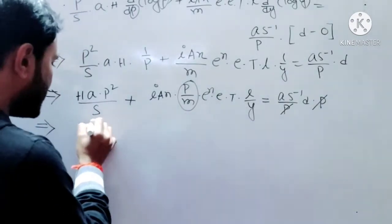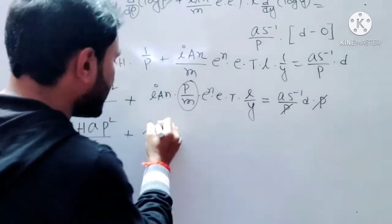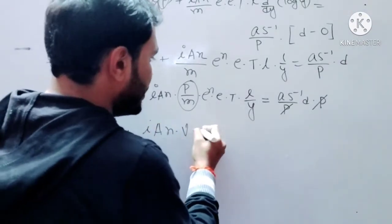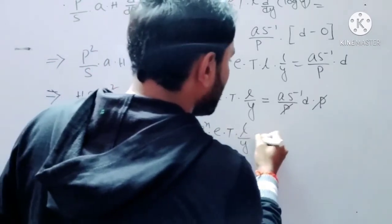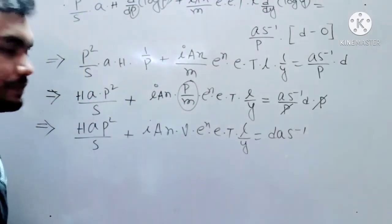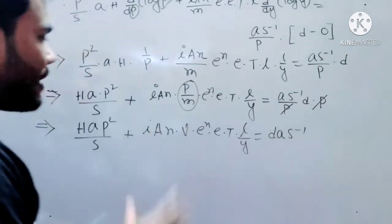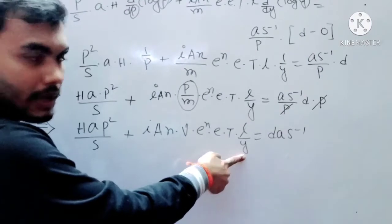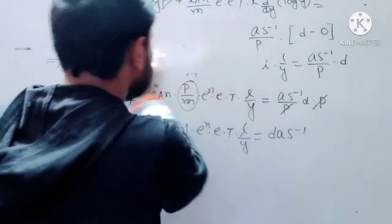So the expression becomes: h times a times p squared over s, plus i times a times n times v times e to the power n times e times t times l over y, equals d times a times s to the power minus 1.